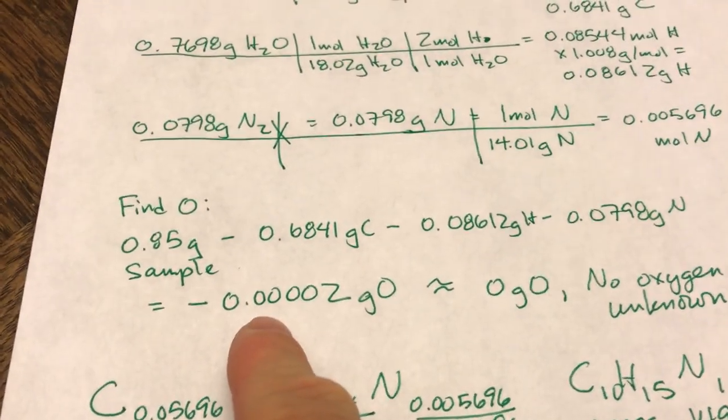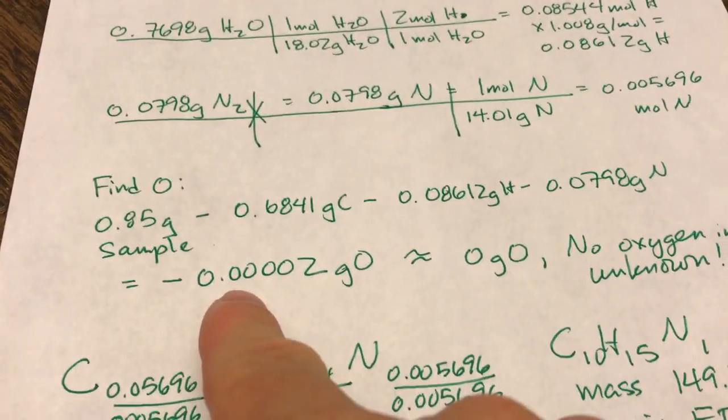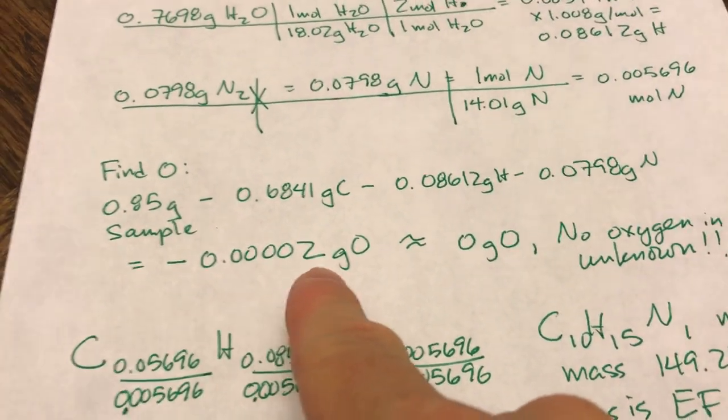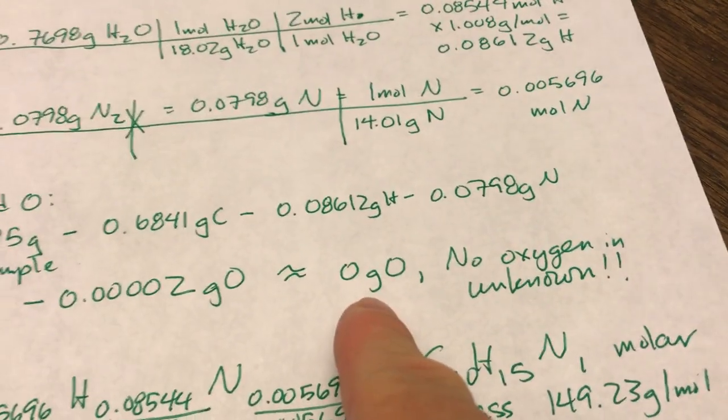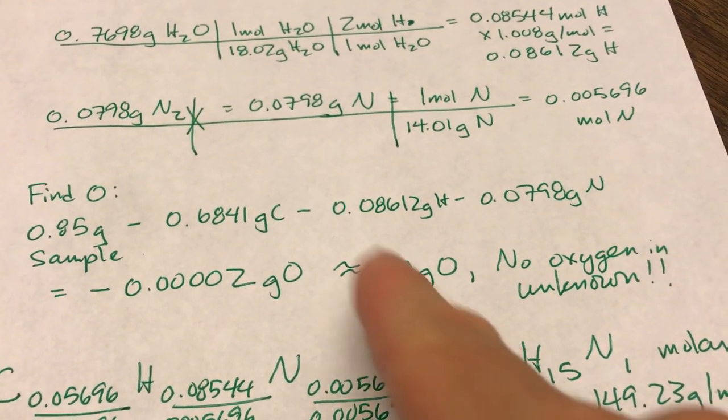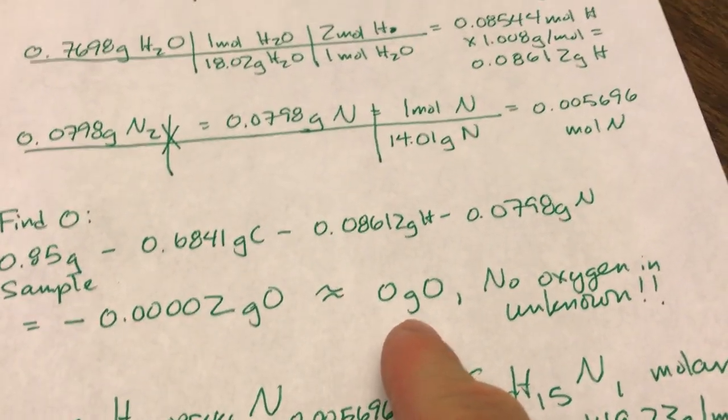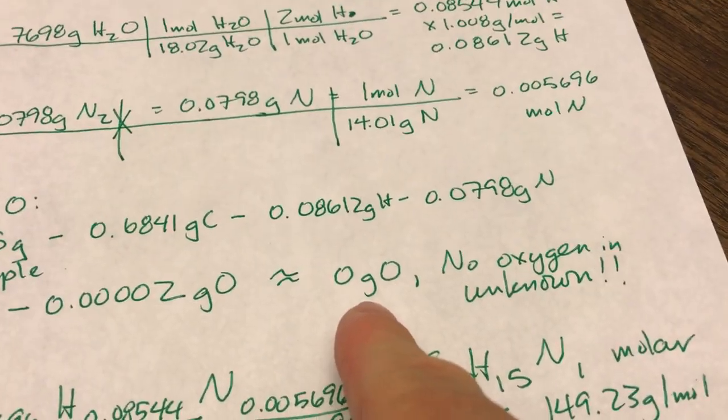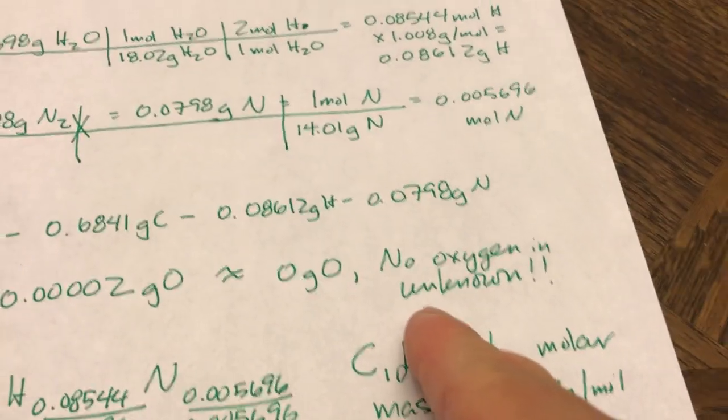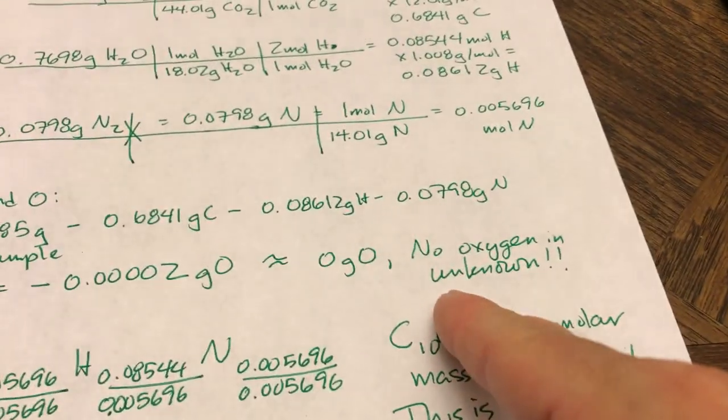First off, negative grams of anything is impossible. But this number is so close to zero that I decided that it must mean, within rounding errors of all this stuff up here, it must mean there are zero grams of oxygen, which means there's no oxygen in my unknown. And that was exciting.